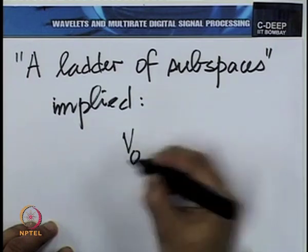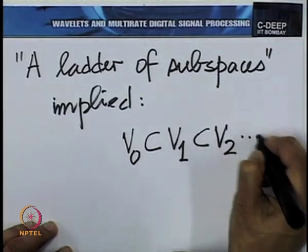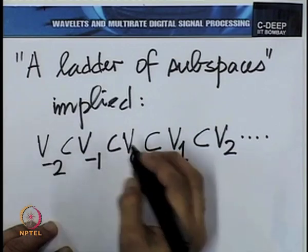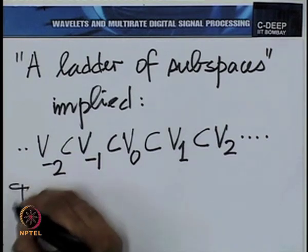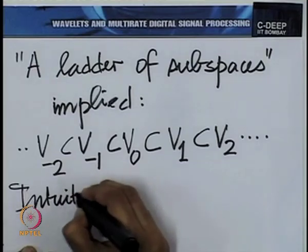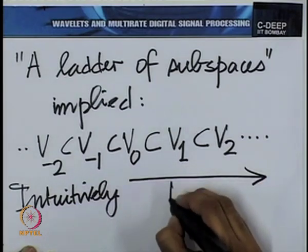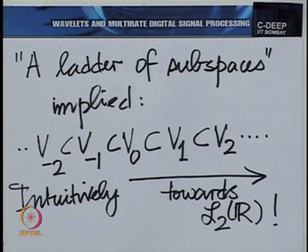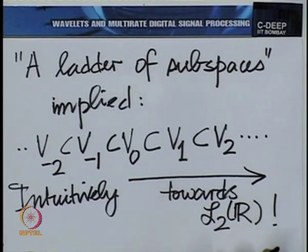There is a ladder of subspaces: V₀ is contained in V₁, V₁ is contained in V₂ and so on, and V₋₁ is contained in V₀, V₋₂ is contained in V₋₁ and so on. As we move upward, we intuitively expect to be going towards L₂(ℝ). What happens when we go in the other direction is also interesting — we will reflect on that now.